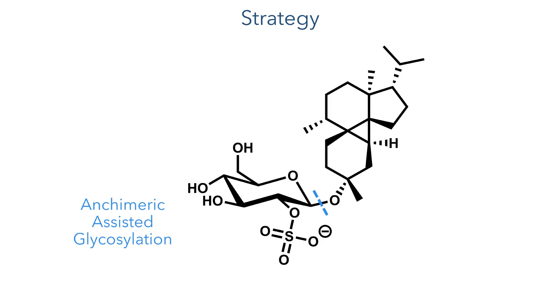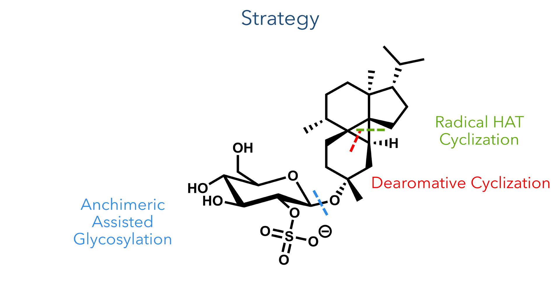To install this beta linkage, they would use an anomerically-assisted glycosylation, while the difficult-to-access cyclopropane ring found at the centre of the framework could be constructed using a de-aromatative cyclisation in addition to a radical hydrogen-atom transfer cyclisation. So let's start the synthesis.